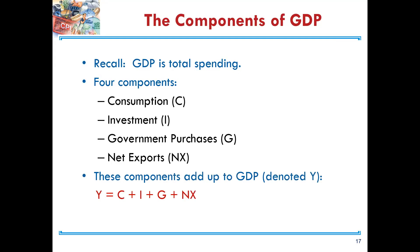GDP is total spending in the economy, and has four main components. The first is consumption, the second is investment, the third is government purchases, and the fourth is net exports. Mathematically, we express these as: Y = C + I + G + NX, where Y represents GDP, C is consumption, I is investment, G is government purchases, and NX stands for net exports.